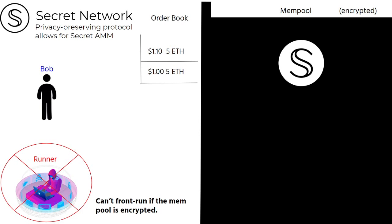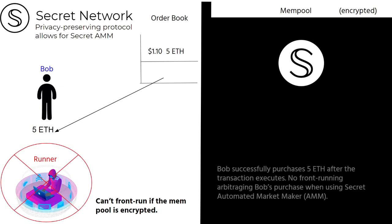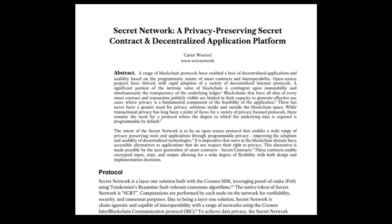Finally, Bob's transaction executes and he is now the proud owner of 5 ETH without ever getting front-run. If you are interested in learning how trusted execution environments and the Secret Network protocol works, you can read the gray paper linked below.